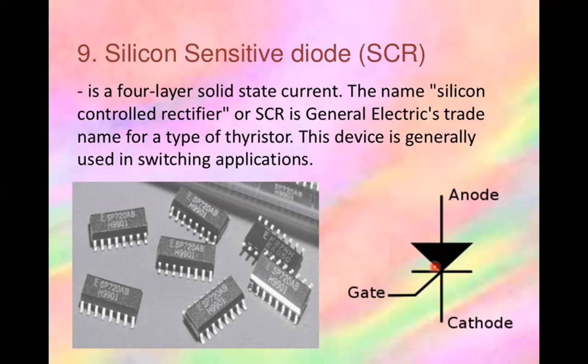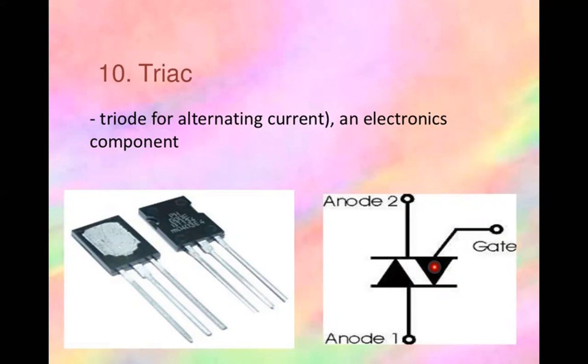A TRIAC is a three-terminal semiconductor switching device that can control AC in both directions. Its three terminals are anode 1, anode 2, and gate. A TRIAC is a high-speed solid-state device that can switch and control AC power in both directions of the sinusoidal waveform.